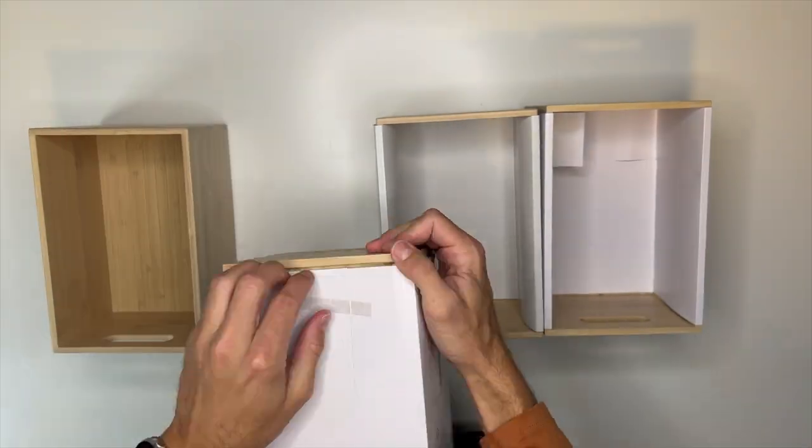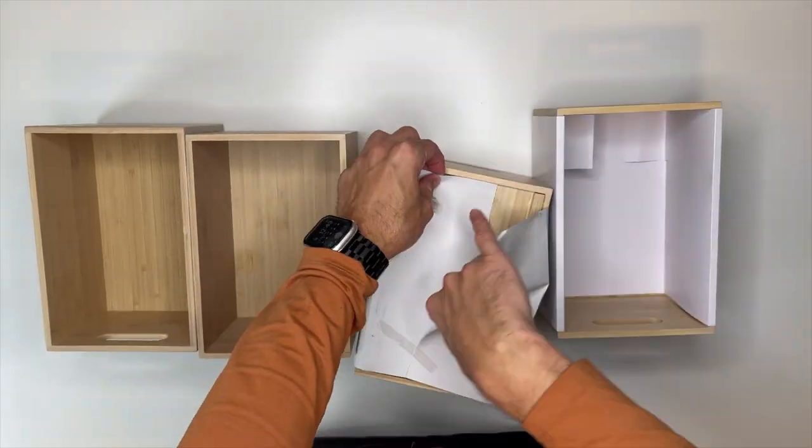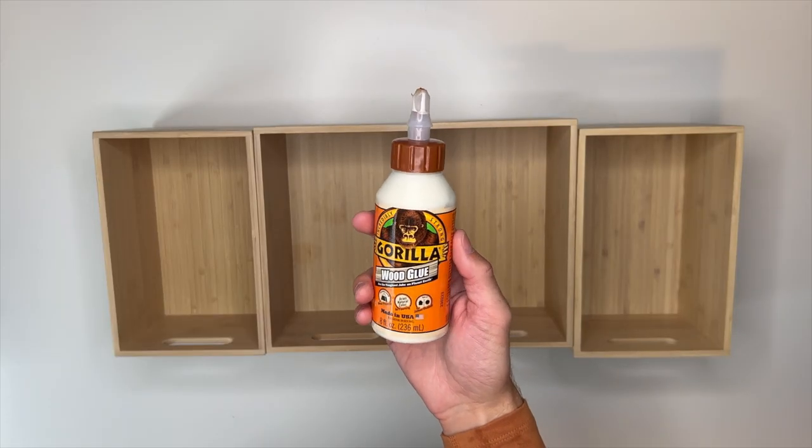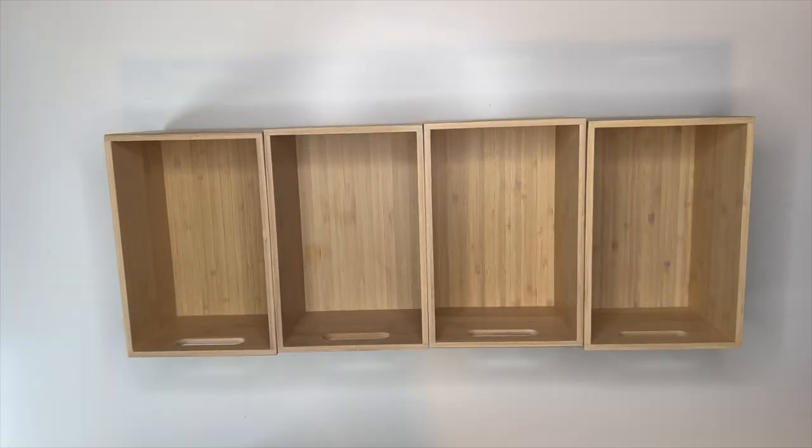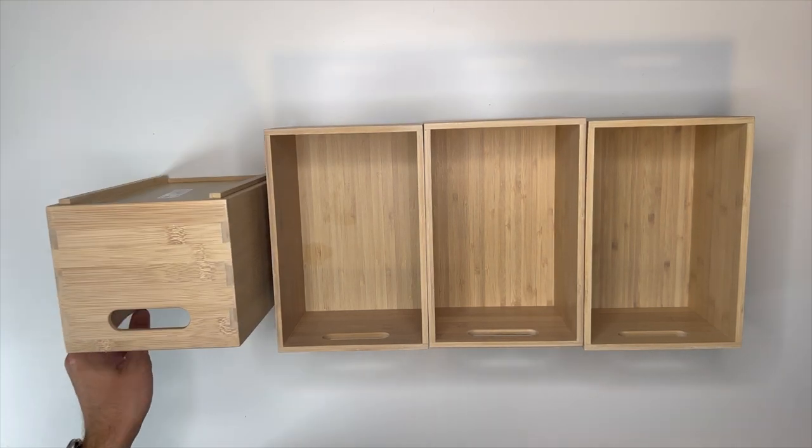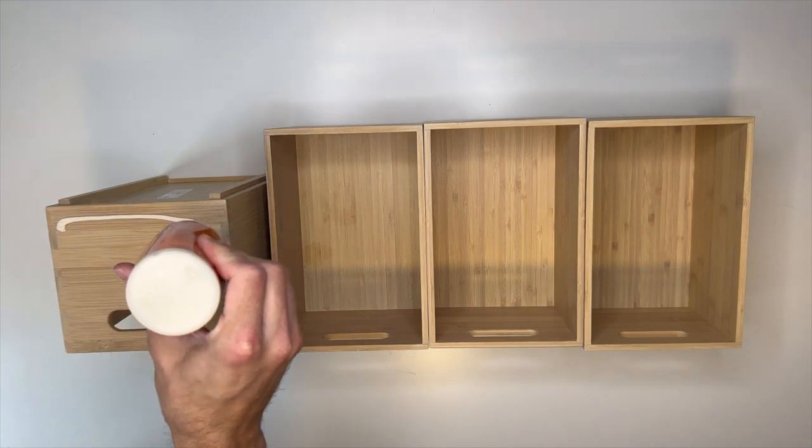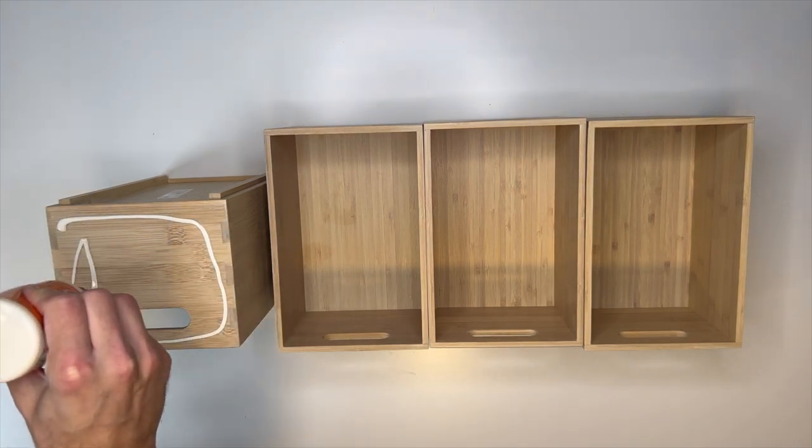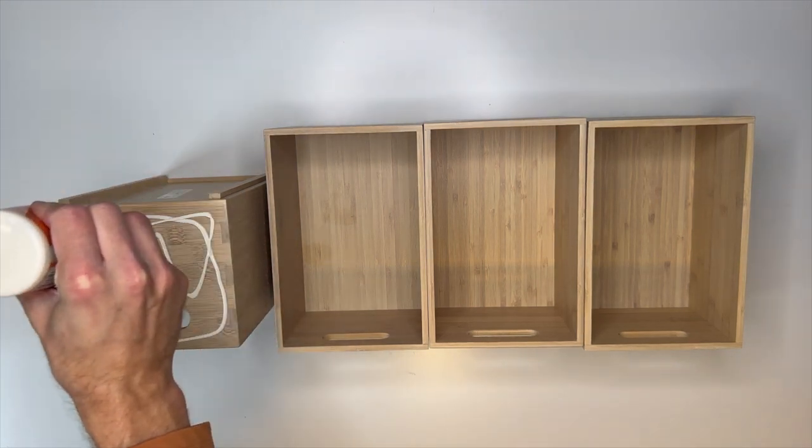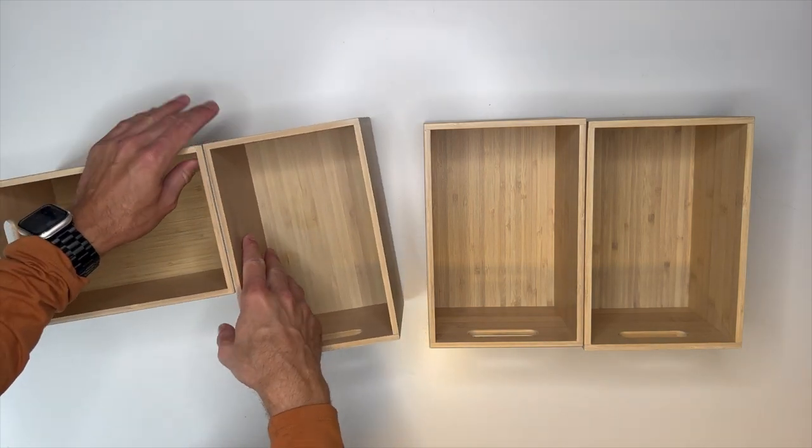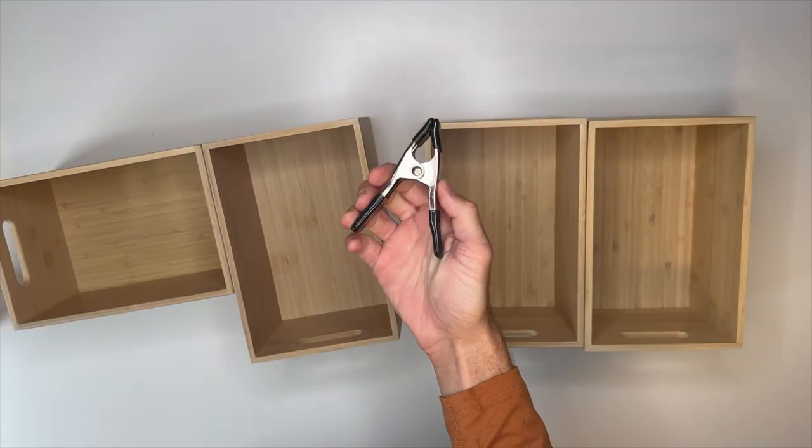We will however need some Gorilla wood glue to put this project together. To get this project started, we are going to apply some wood glue to the shorter end of one of the crates, the side with the opening as you can see here, and then we are going to align that side so that it is flush with the very edge of the longer side of another crate.